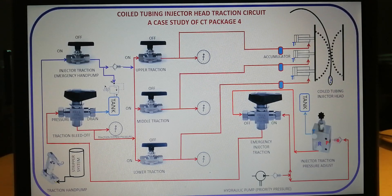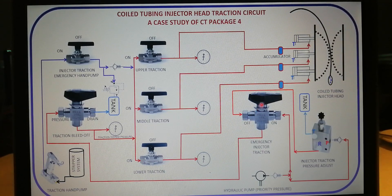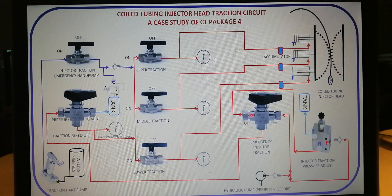A check valve is also installed on the pressure port to prevent flow back. By the time you turn the adjust knob clockwise, hydraulic then flows out from the port out to the off port of the emergency injector traction three-way port valve. Since this valve is in the off position, there will be communication between this off port and the bottom port.